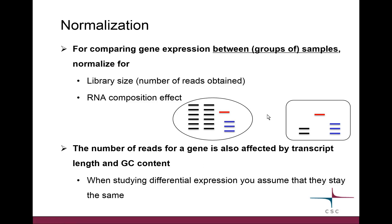Think about sequencing as a random sampling approach. Imagine these cells as two bags: you blindfold your eyes and take three sticks from each bag randomly. When you open your eyes and look at the colors, the chances are you would get more black from the round cell than the square one, and since you only took three, you probably wouldn't get as much blue or red from the round cell.